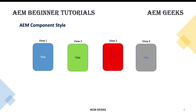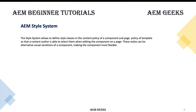To achieve a standard solution, AEM came up with something called the style system. Using the style system, you can define classes in your component policy and page policy. These classes can later be chosen by your content authors, and based on their selection a different style can be applied. Obviously the styling should already be written in your client library — your CSS and JavaScript.